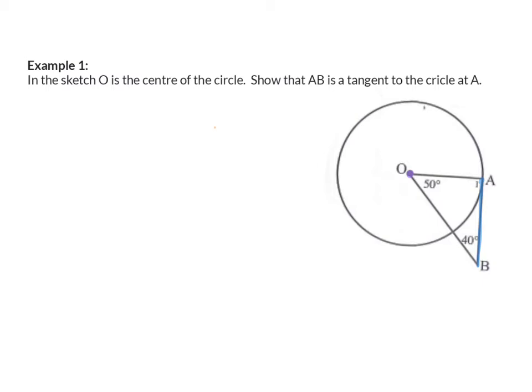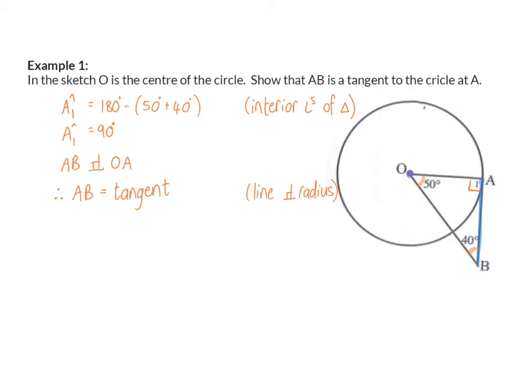In our sketch, we were given that angle O is 50 degrees and angle B is 40 degrees. So, using interior angles of a triangle, we can then go and calculate the size of angle A1. Here we can now say that angle A1 is 90 degrees. And because it's 90 degrees, we can see then that AB is perpendicular to the radius OA and therefore AB is a tangent. The reason we need to give is line perpendicular to the radius.